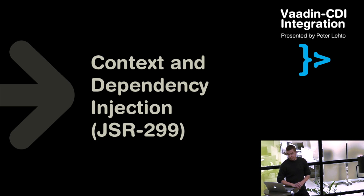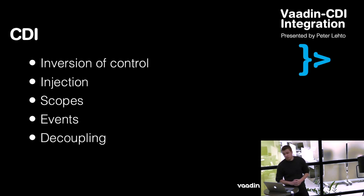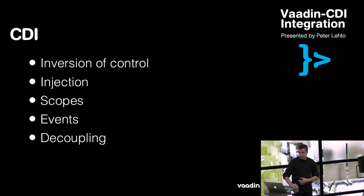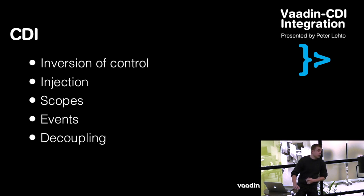CDI stands for Context and Dependency Injection, JSR 299, and its key features are basically inversion of control, injection, scoping, events, and decoupling of different larger structures and components from each other. By using CDI you are able to write code which is less coupled and works with inversion of control principles, allowing you to use injections. And if you're familiar with the event bus in Spring, for example, CDI provides a similar kind of event mechanism that allows you to deliver events from one component to another based on a mechanism that doesn't even require those components to be coupled together.